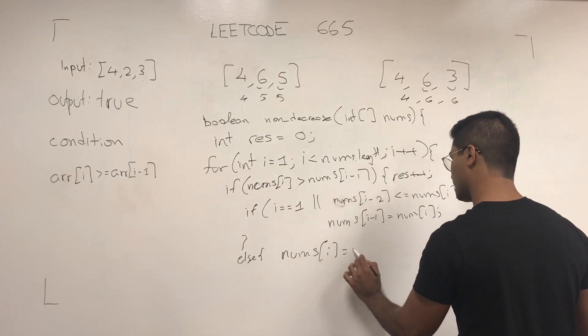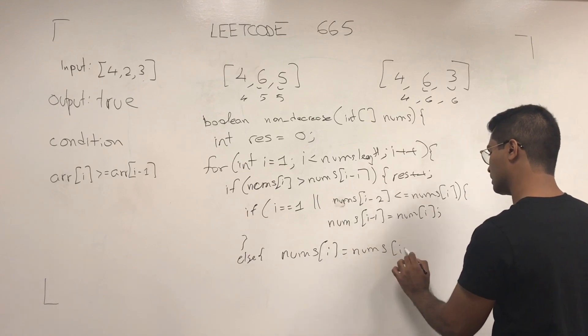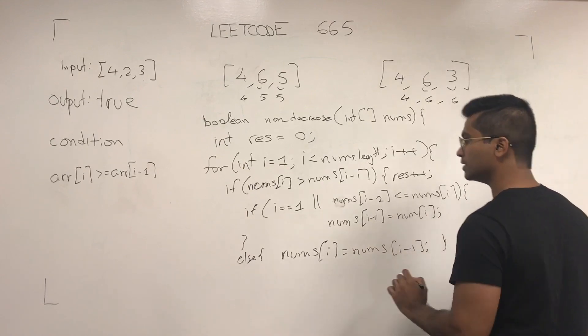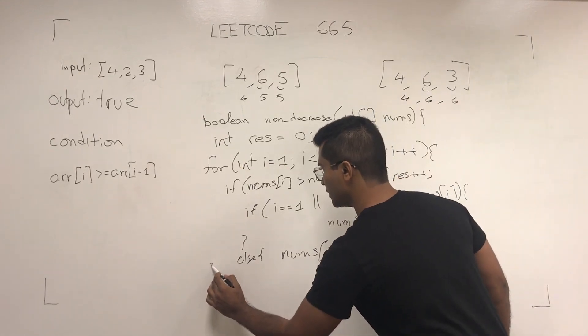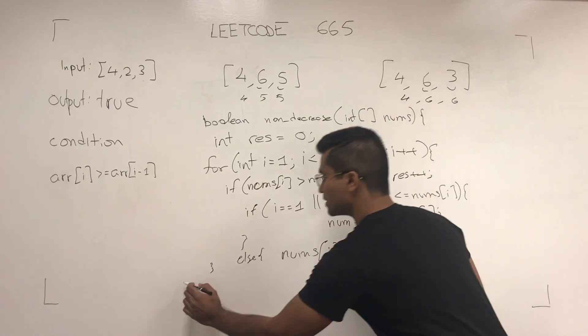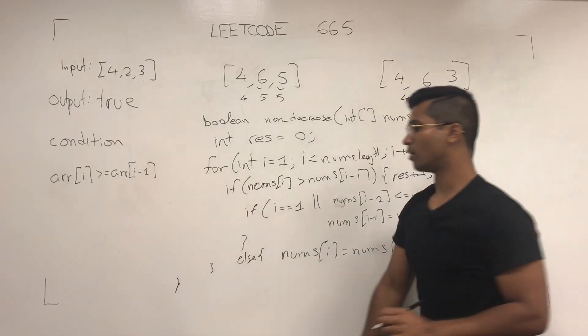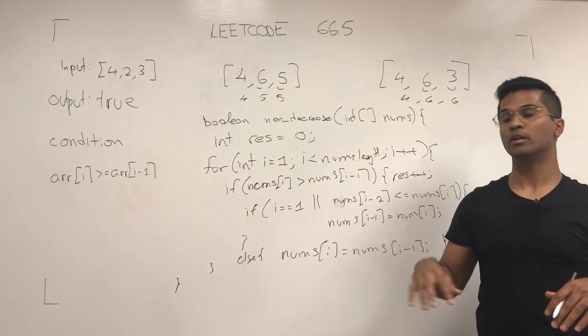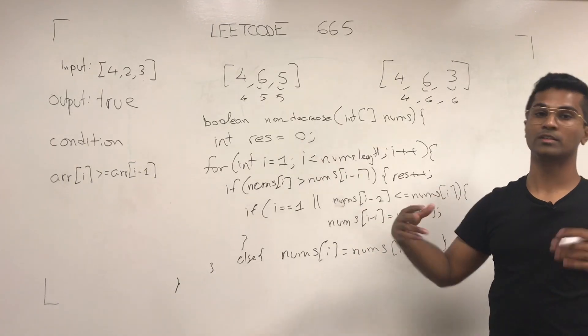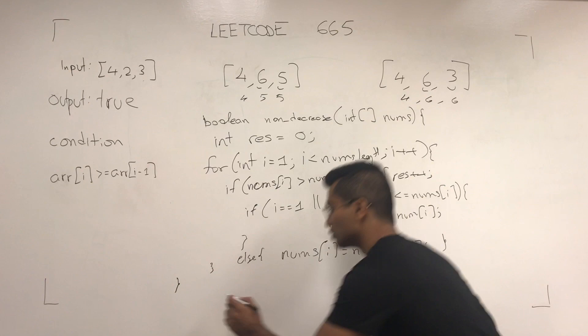Else, nums of i equals nums of i-1. And that's the else, that's the if, and that's the outer for loop. And then all we have to do is return true. We have to return if result is less than or equal to 1, because we can only modify at most 1.